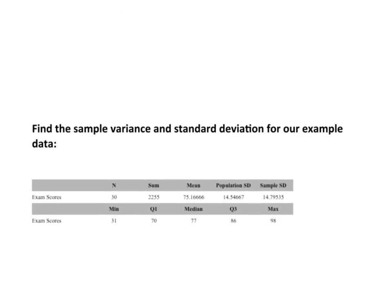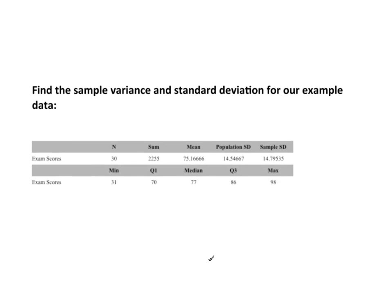So, as an example here, take a look at the standard deviation and the variance for our data. Well, here is the population standard deviation is right here, and the sample standard deviation is right here. Well, our data, we will consider it sample data. So, we would use S equals 14.79535. So, if we wanted to find the variance, what we really need to do is simply take that value, 14.79535, and square it.